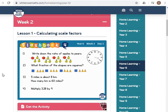How did you get on? Let's have a look at them together. Number one, write down the ratio of apples to pairs. Well, I can see, although it's the same pattern repeated four times, that when there's one apple, there are three pairs. So the ratio is one to three.